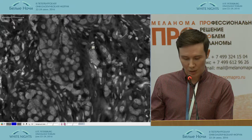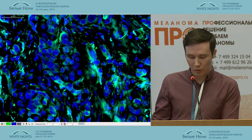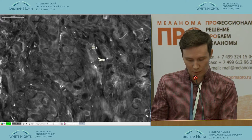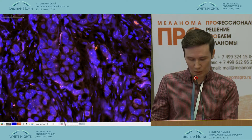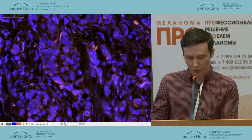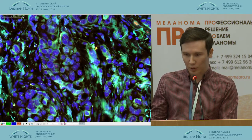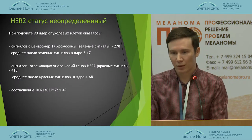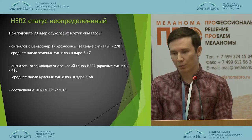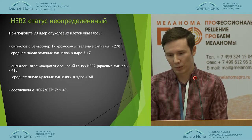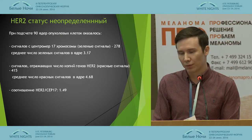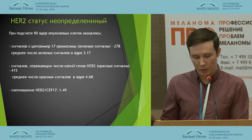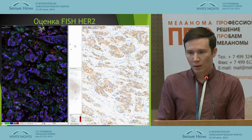We calculate the tumor nuclei and calculate the green signals from chromosome 17 and the red signals from the HER2 gene. That is how the picture looks, and in this case the status is not defined because the average number of red signals is 4.68.